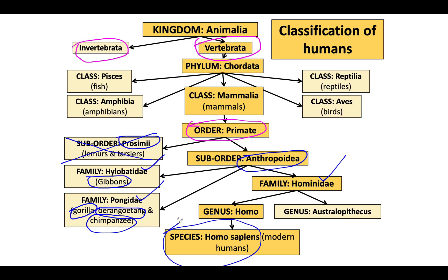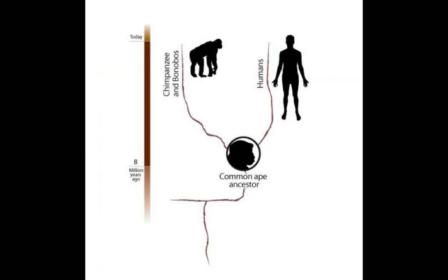Many of you may ask: could the chimp be our ancestor? No. Evolution is not saying that. Evolution is saying that the chimp and the human share common ancestry — we are on the same line of development, but on different branches.